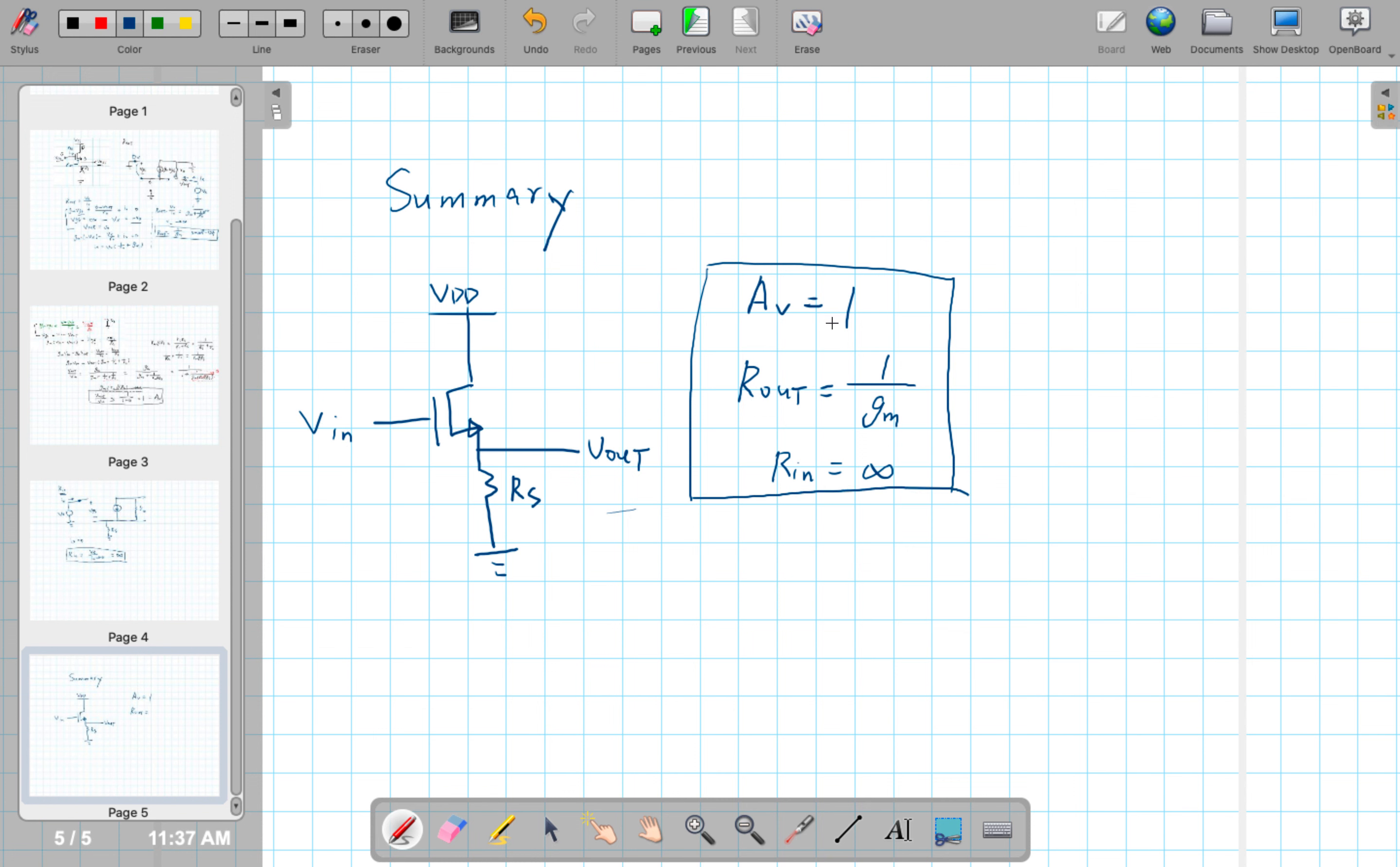So we can use the common drain configured MOSFET as a source follower where it yields unity gain, unity voltage gain. It has a small-ish output resistance and it has a very large input resistance. Thank you very much for watching.